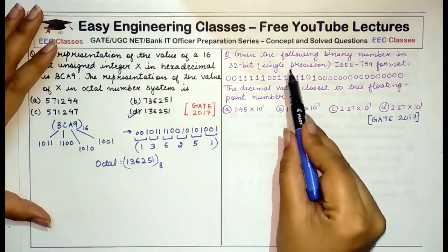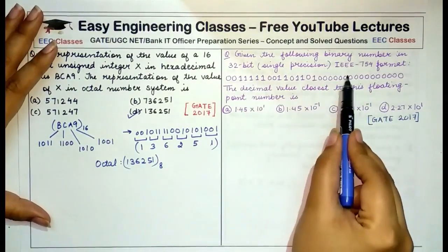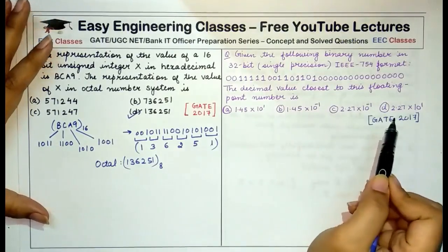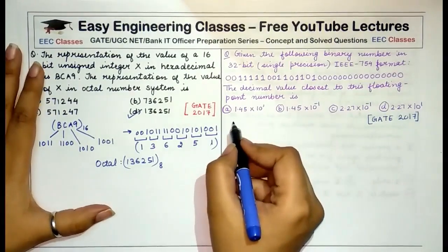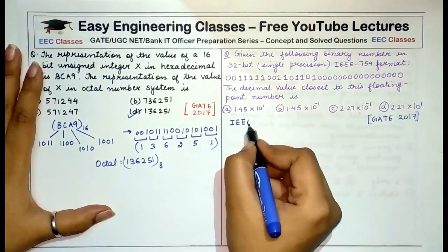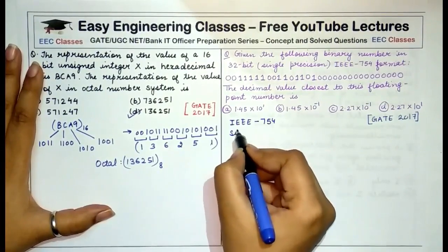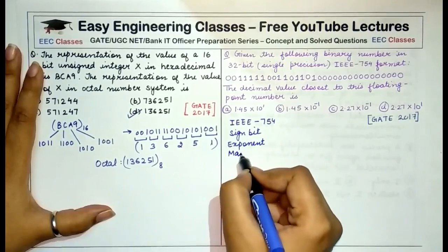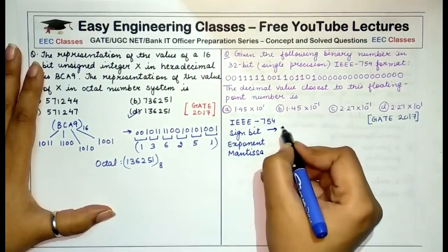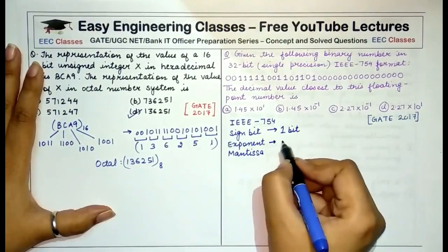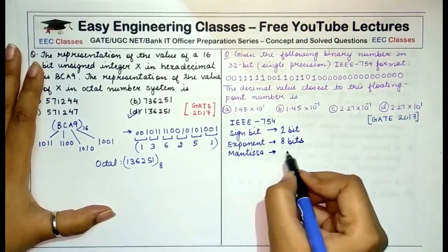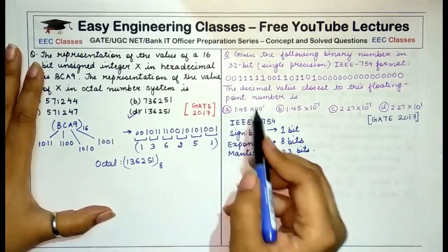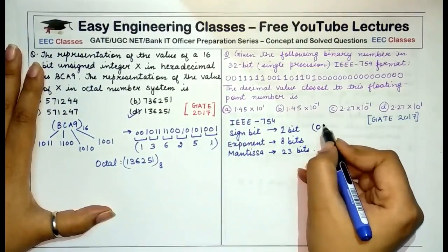Next question: a binary number is given in 32-bit IEEE 754 format. Find the closest decimal value. Recall that in IEEE 754 format the number is divided into 3 parts: the sign bit (1 bit), the exponent (8 bits), and the mantissa (23 bits). The leftmost bit is the sign bit, which is 0 here.